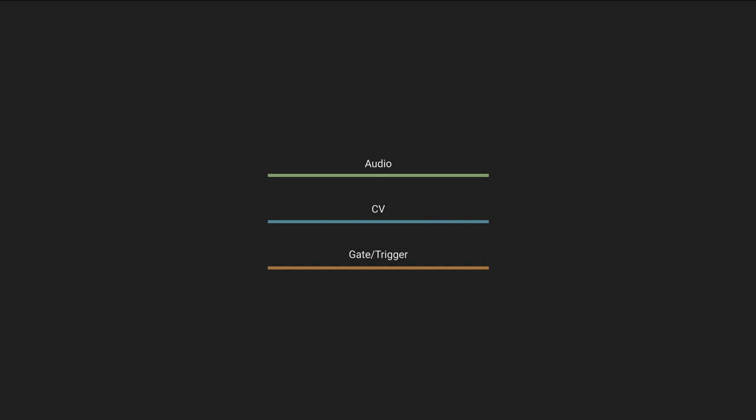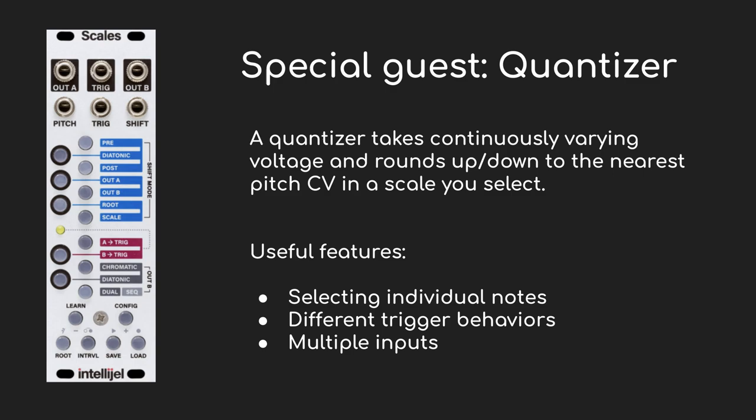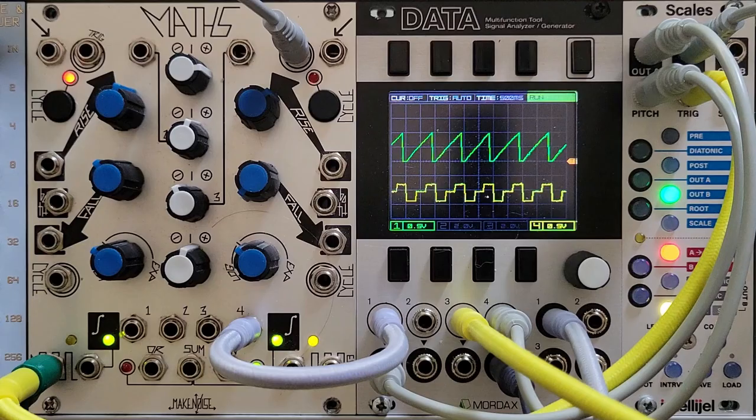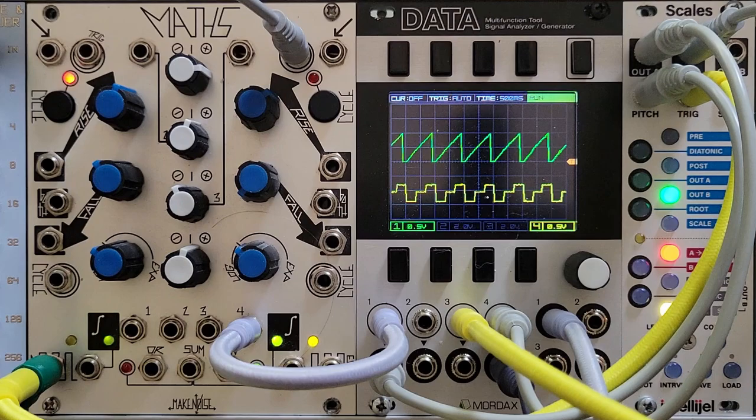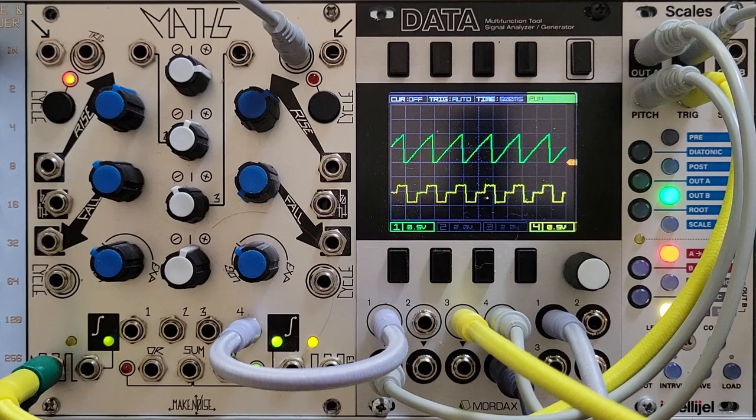If you find the diagrams helpful, I've made a PDF of them and it'll be linked in the description. For this video, I'm going to be making constant use of a quantizer. If you're not yet familiar with a quantizer, the basic idea is that it snaps pitch CV to a specific musical scale — it takes in a continuous voltage and rounds it up or down to the notes in that scale. I'm using the Intelligel Scales quantizer, which allows me to select individual notes, responds to triggers in different ways, and I can quantize two signals at a time. But whichever quantizer you have will probably work fine. You can see here how it's taking a continuous variable voltage in green and outputting just a few values in yellow.